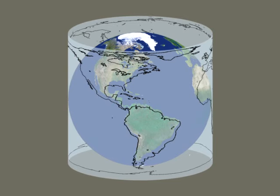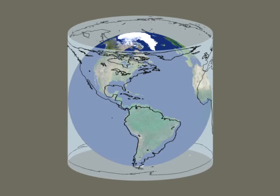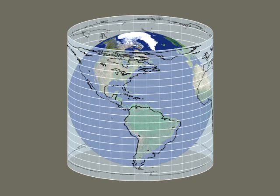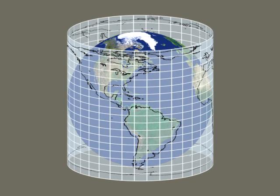On a map made using cylindrical projection, the parallels and meridians are straight lines that intersect at right angles.